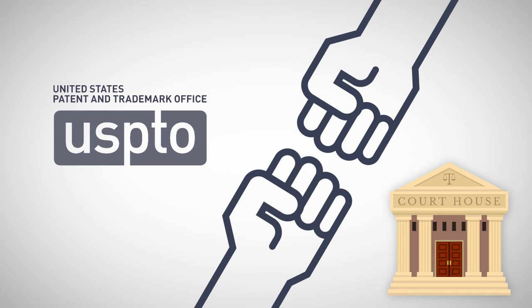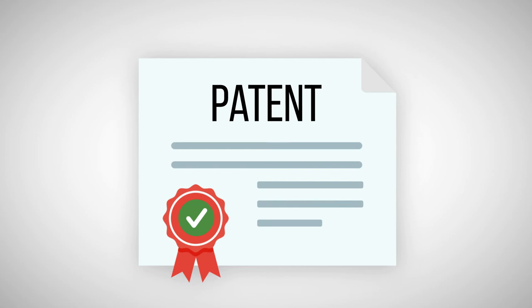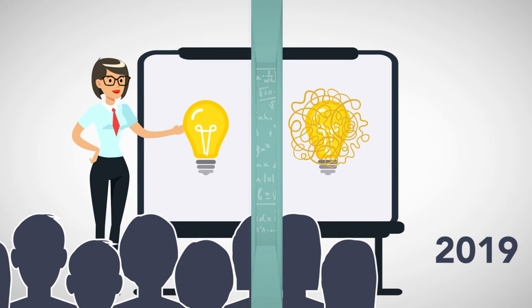The patent office rejected thousands of claims based on Alice, and federal courts in the Patent Trial and Appeals Board invalidated hundreds of patents. However, several other patents claiming abstract concepts were issued or upheld. For that reason, in 2019, the patent office issued some guidance for practitioners in courts, most likely opening the door to patentability for some computer software and other abstract concepts.